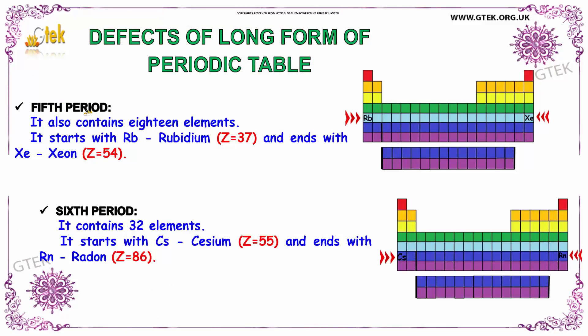The fifth period contains once again 18 elements. It starts with rubidium and ends with xenon. The atomic number of xenon is 54 whereas rubidium is 37.